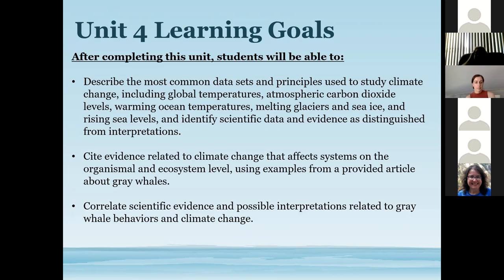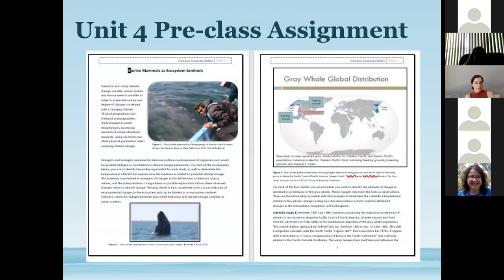The learning goals for unit four include having students look at common datasets and principles used to study climate change: global temperatures, atmospheric CO2, warming ocean temperatures, melting of glaciers and sea ice, and rising sea levels. Students are guided to distinguish scientific data and evidence from interpretations — applicable to oceanography, teaching the scientific method, and environmental analysis. Students will also cite evidence related to climate change from various articles affecting systems at the organismal and ecosystem level. Scientific articles have been condensed into one student reading assignment; for upper-level or graduate courses, the original peer-reviewed articles can be assigned.